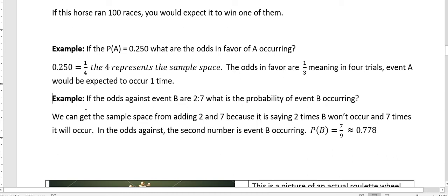So I'll say that again. We can get the sample space from adding 2 and 7. Because it says 2 times B won't occur and 7 times it will occur. So that means there's 9 events altogether. And odds against the second number is B happening. So odds against the second number, the 7 here, is that B will happen. That's why we can take 7 and put it over 9 and say what the probability of B occurring would be.